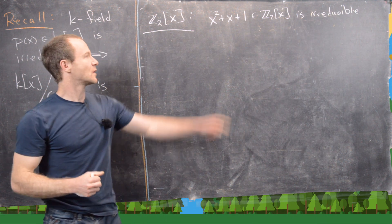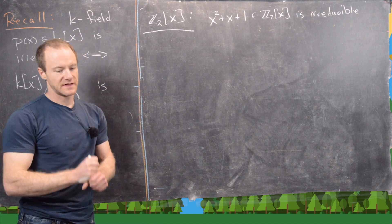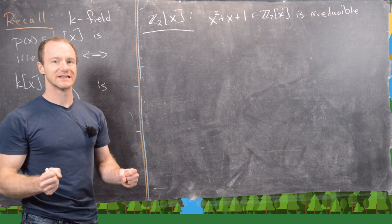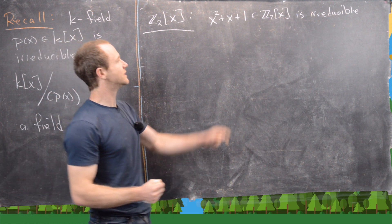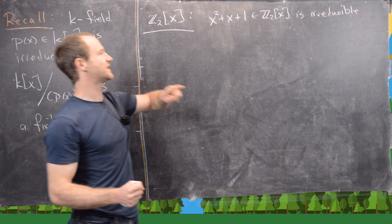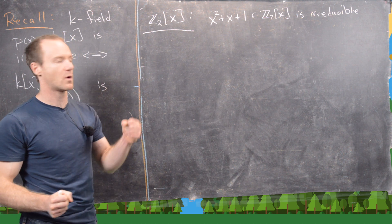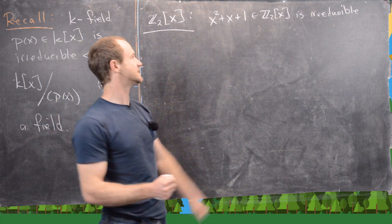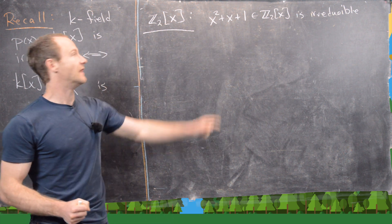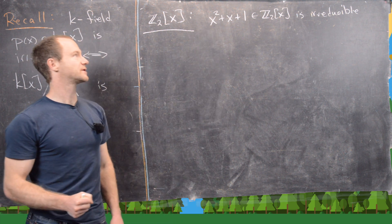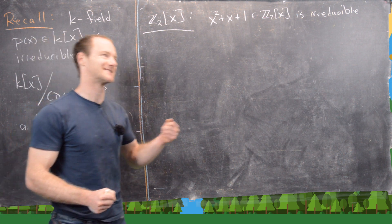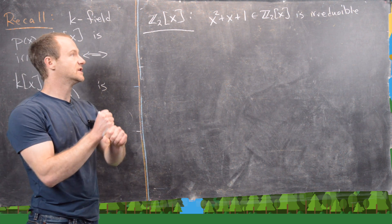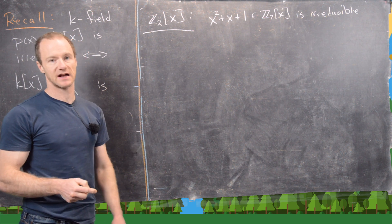How do we know that? Well, if it did factor, it would have to factor into two linear factors, which would be related to the roots. But the only possible roots are 0 and 1, the only elements in Z₂. Plugging in 0 gives 1, and plugging in 1 gives 1+1+1=3, which equals 1 in Z₂. So x²+x+1 has no roots in Z₂, meaning it's irreducible.